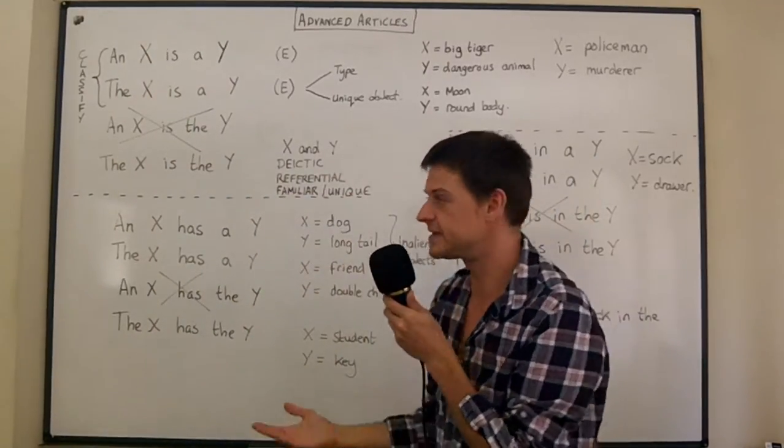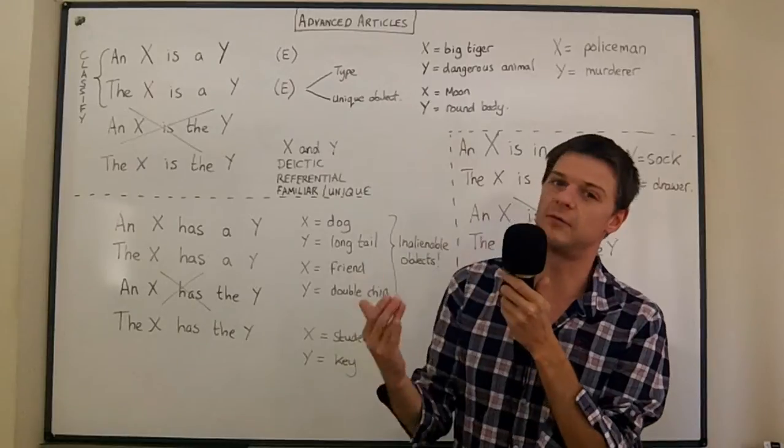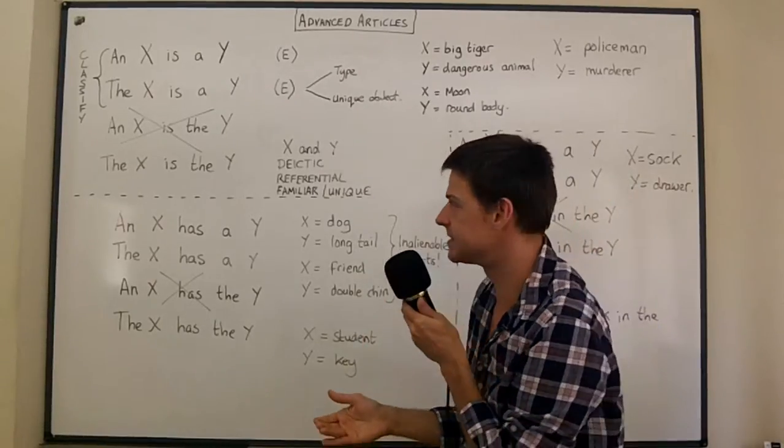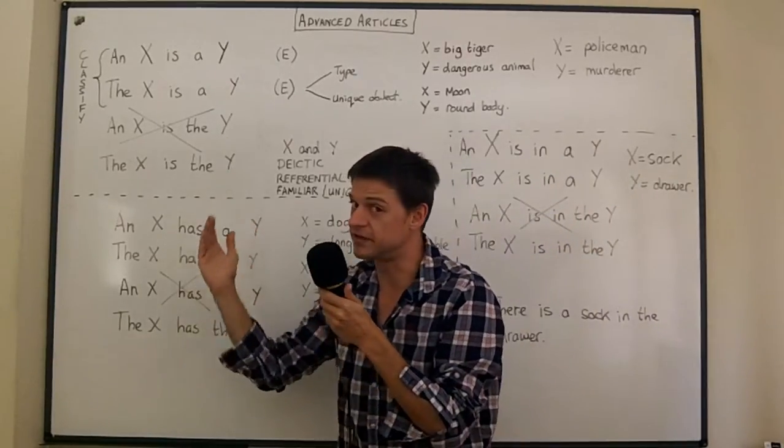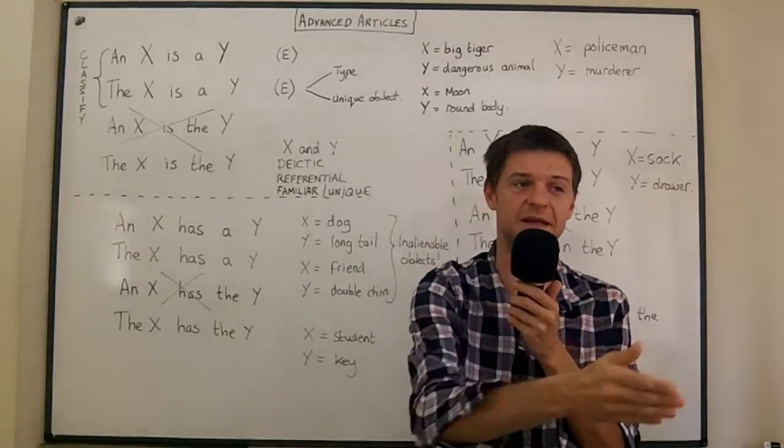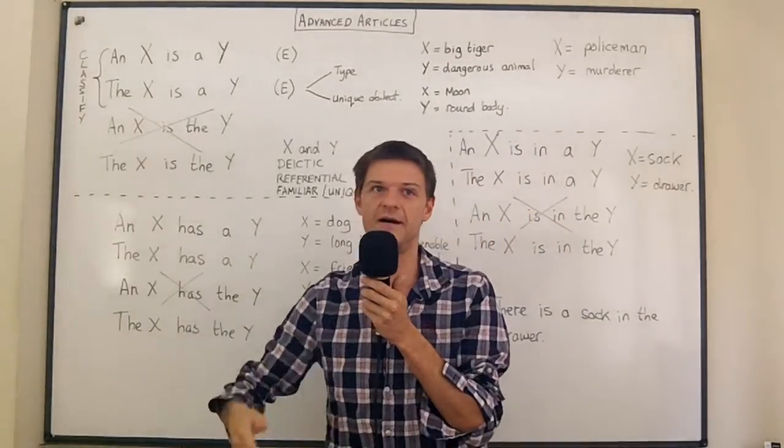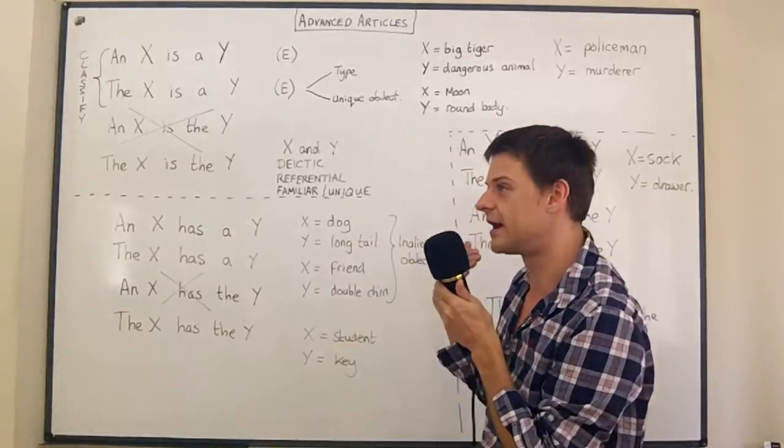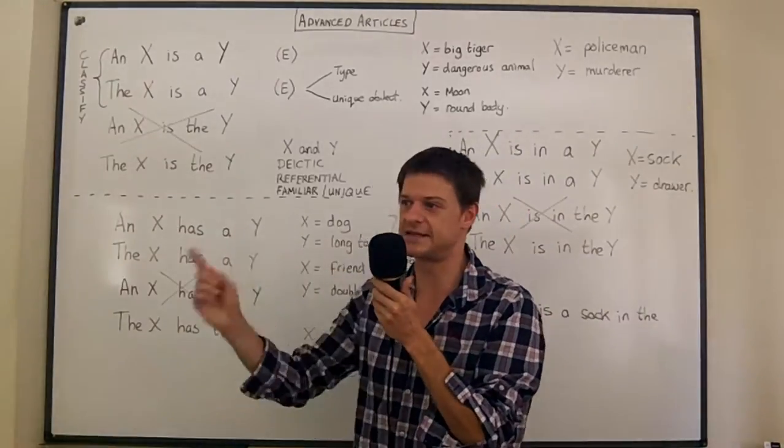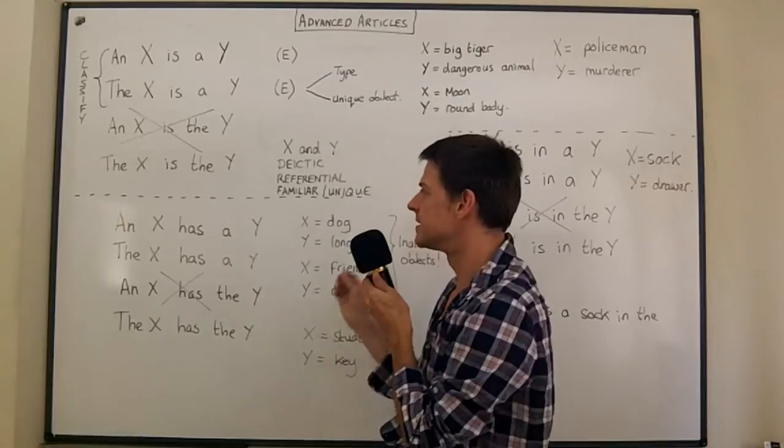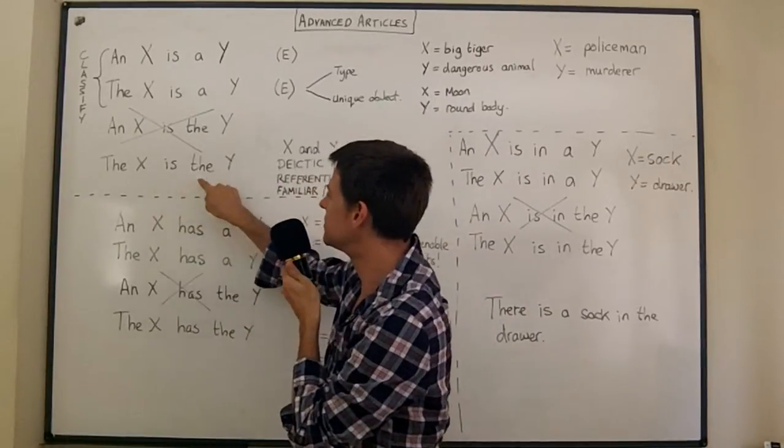However at the end of a detective novel you know exactly which murders have been committed. And you know who the policeman is because you'll probably have a policeman, a doctor, a lawyer, a number of different professions in the story.